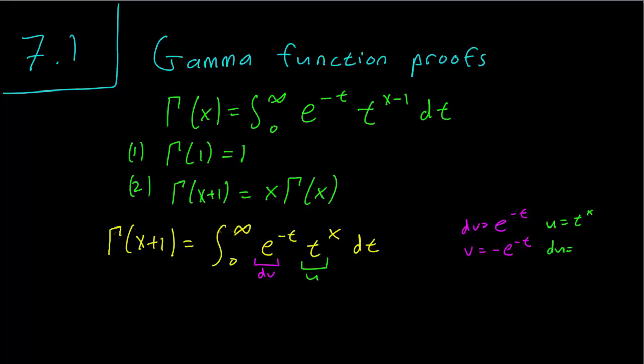So by integration by parts, we know that the integral of u dv is going to be equal to uv minus the integral of v du.